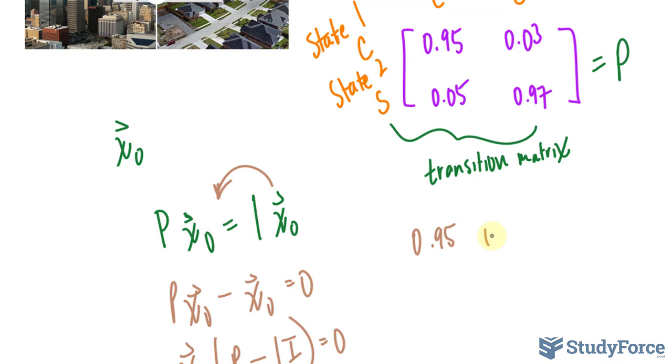The identity matrix, so let me just rewrite this part: 0.95, 0.03, 0.05, 0.97, minus 1, 1, 0, and 0.